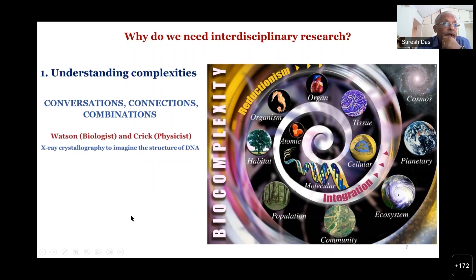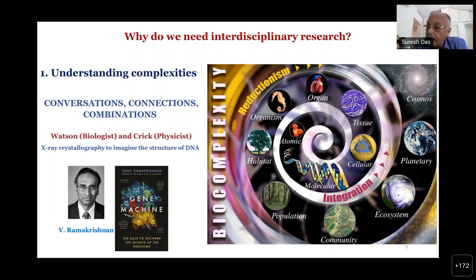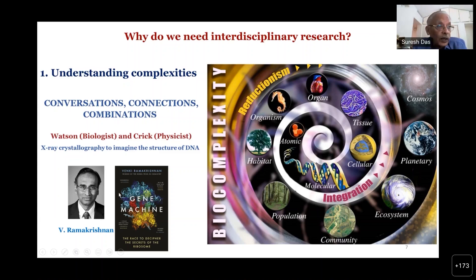Watson was a biologist and Crick was a physicist. Together with X-ray crystallography, they imagined the structure of DNA — the basic life molecule — for which they won the Nobel Prize. Venki Ramakrishnan started his research as a physicist, went on to do research in biology, and then won the Nobel Prize in chemistry. These are clear examples of people who worked in interdisciplinary areas.